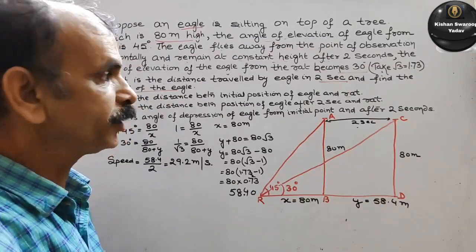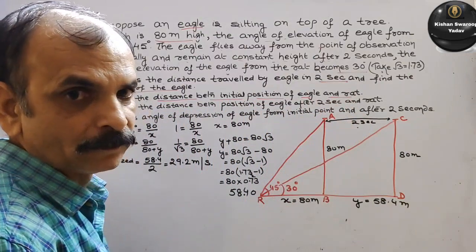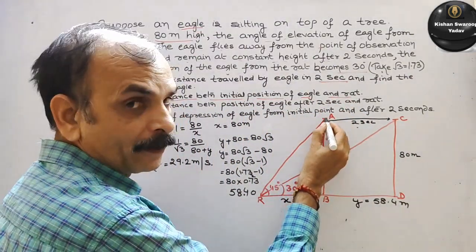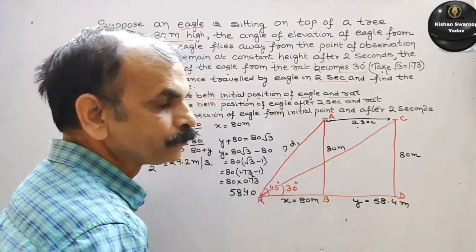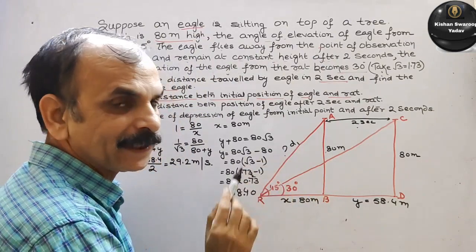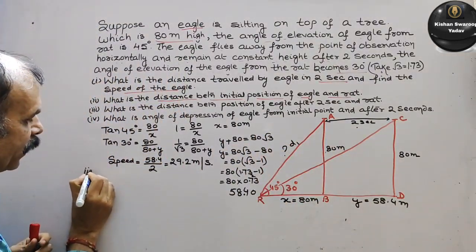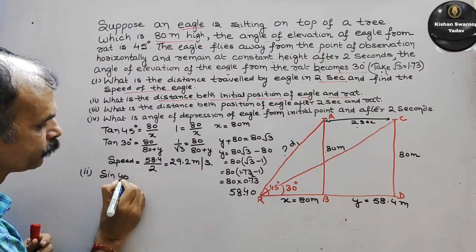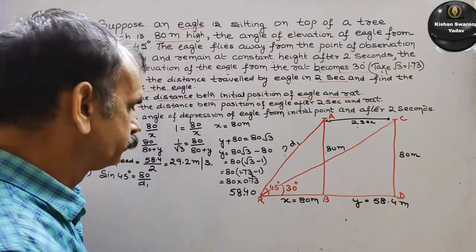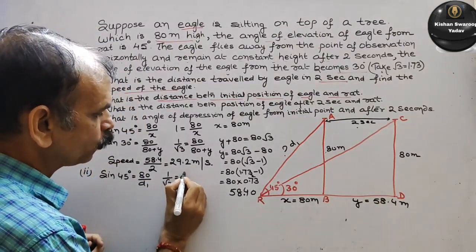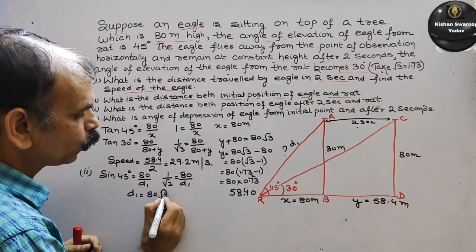Next, second question: what is the distance between the initial position of eagle and rat? तो initial position eagle का A था, और rat यहाँ है. आपको यह distance D1 निकालना है. Opposite हमको पता है, hypotenuse निकालना है, तो sine use करेंगे. Sine 45 degree is equal to 80 by D1. Sine 45 होता है 1 by root 2, तो 1 by root 2 is equal to 80 by D1, तो D1 is equal to 80 root 2 meters.